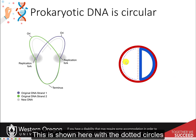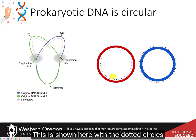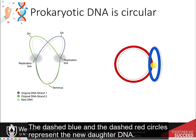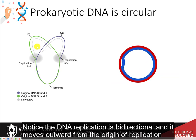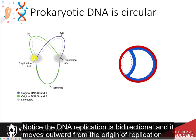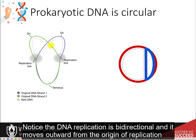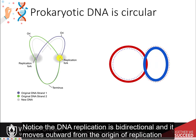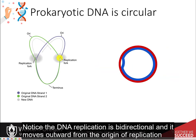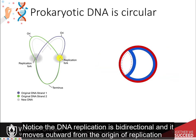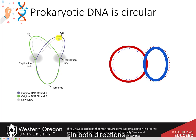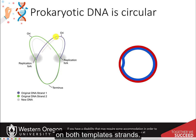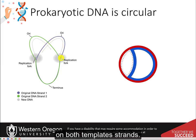This is shown here with the dashed circles. The dashed blue and the dashed red circles represent the new daughter DNA. Notice that DNA replication is bidirectional, and it moves outward from the origin of replication in both directions on both template strands.